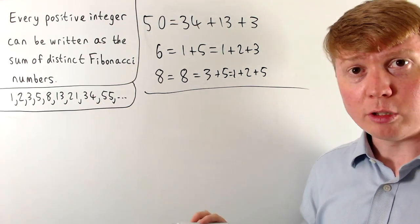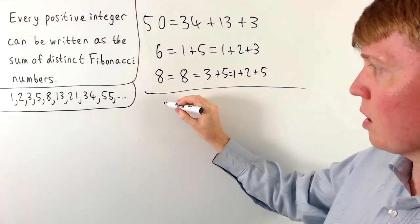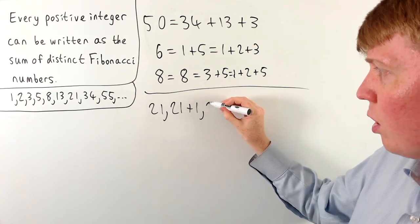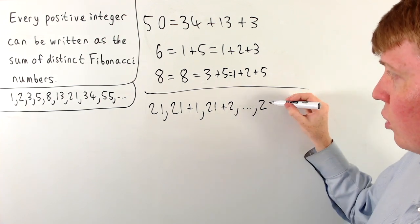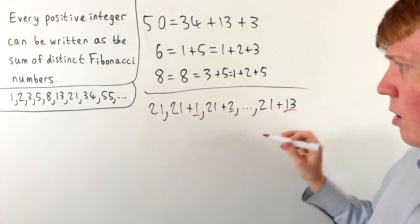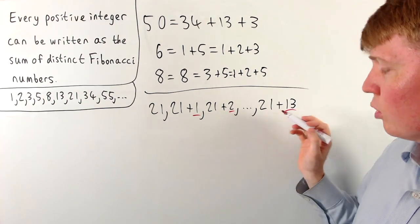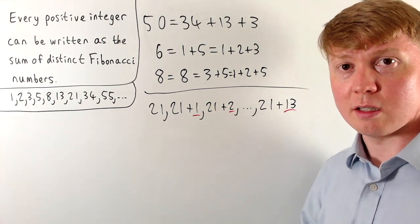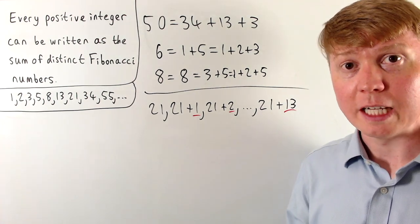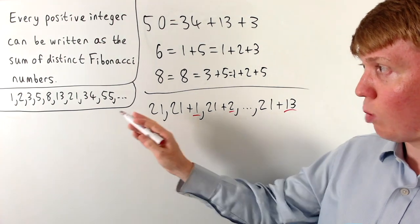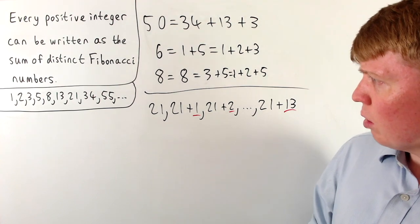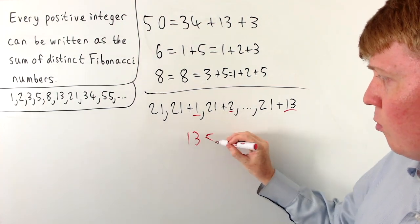Let's imagine we want to show that every number between 21 and 34 can be expressed like this. We can write these as 21, then 22 as 21 plus 1, 21 plus 2, and so on up to 34 as 21 plus 13. So if we have an inductive step telling us that all of 1, 2, 3, 4, all the way up to 13, can be expressed as a sum of distinct Fibonacci numbers, we could just add 21 to all of these. This gives us a nice way of expressing all integers from 21 to 34 as a sum of distinct Fibonacci numbers. And we know we don't get any repeats, because 13 is much less than 21.